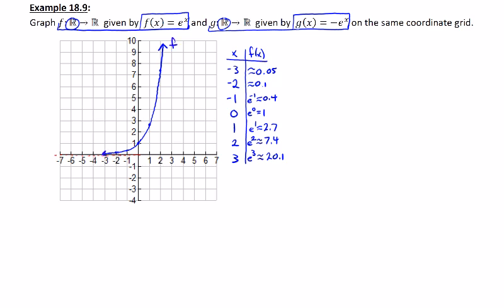Now the graph of g is going to look almost identical to the graph of f except we have a negative 1 multiplier. That negative 1 multiplier means that we're going to perform the transformation reflection over the x-axis.